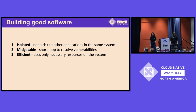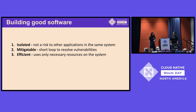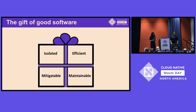When you talk about that, your first response could be: build something that does what it's supposed to do. But if you want to go above and beyond that, good software should be isolated — your software shouldn't be able to affect other applications on the same system. It should be mitigatable, so if something does go wrong, you can fix it as fast as possible. And finally, it should be efficient — only use the resources it needs. All this comes together: good software is maintainable.